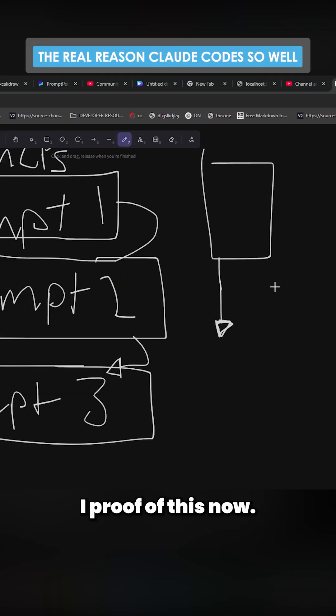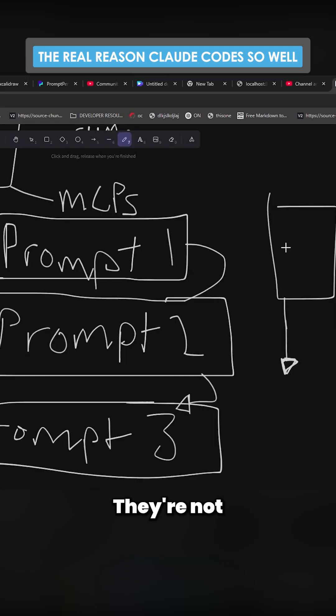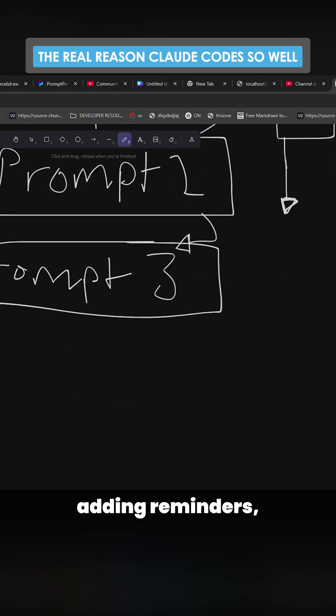I have a theory, I have proof of this now. It keeps doing these XML tags, automated reminder from Anthropic. They're not just sending the context window. What they're also doing is at the end of the context window so far, they're also adding reminders, tags, do this, basically.